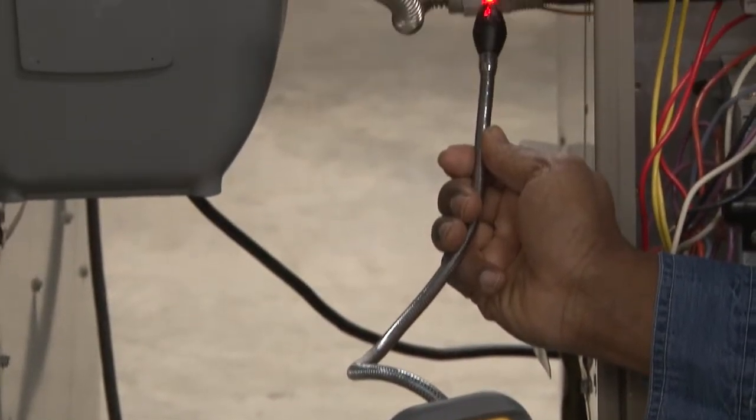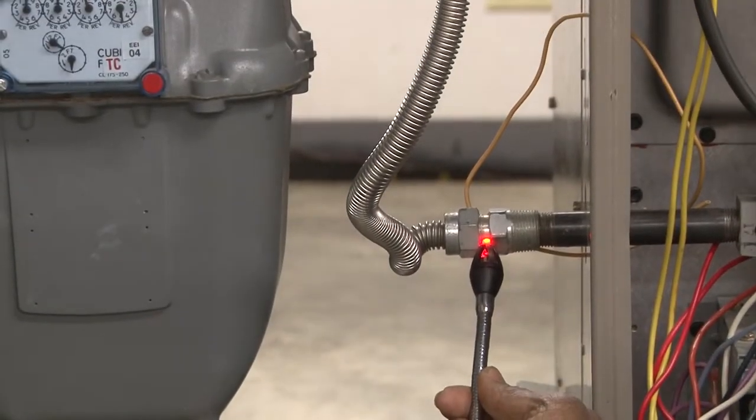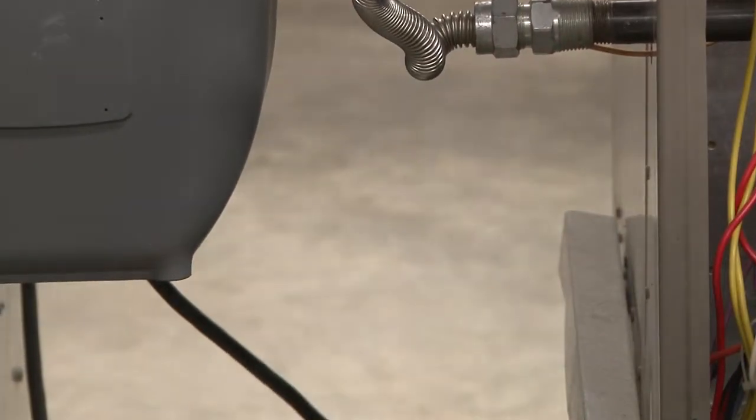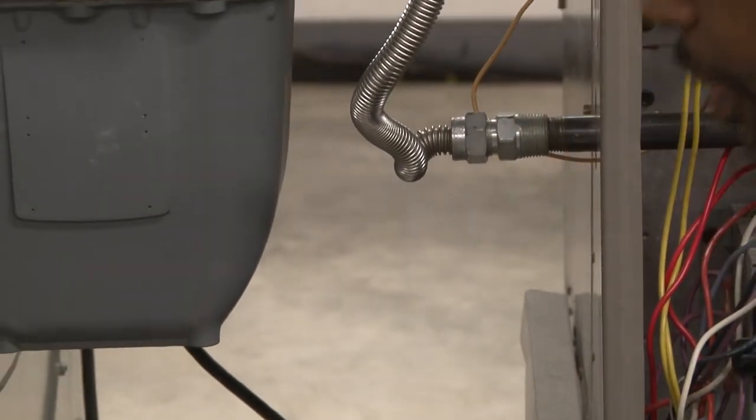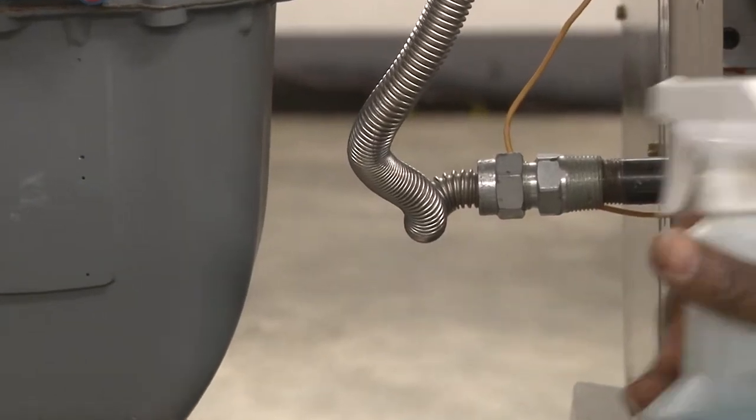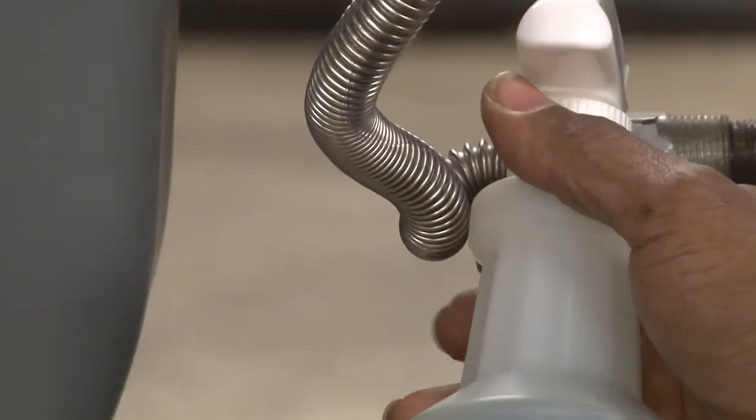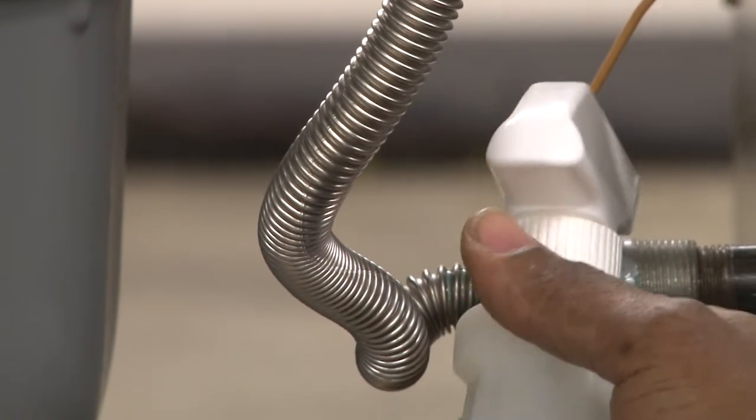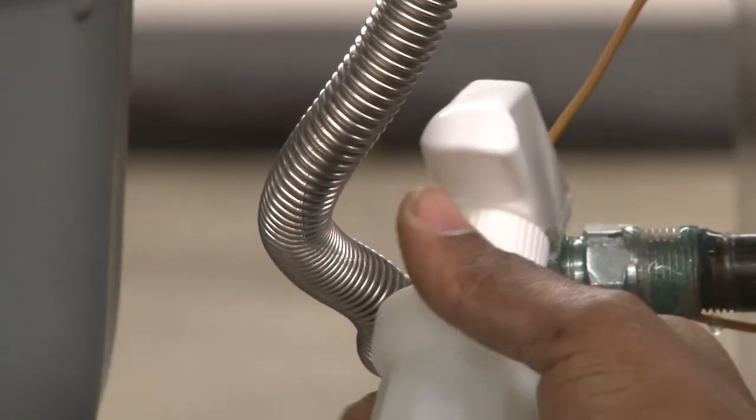So the next thing we're going to use is some soap bubbles, basic soap bubbles, to locate this leak. I'm going to put this down while I use soap bubbles, and we're going to add some to the piping and see where the leak is coming from.